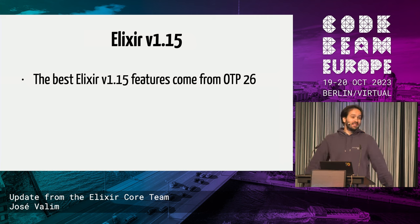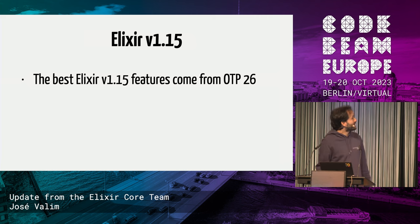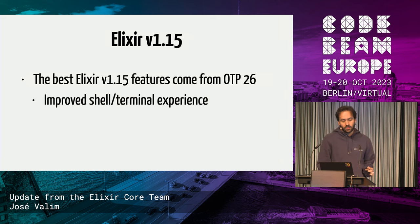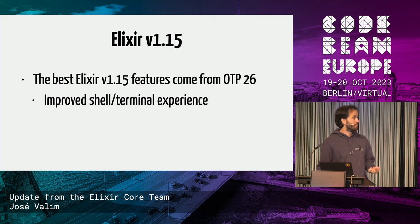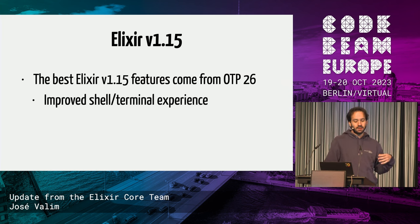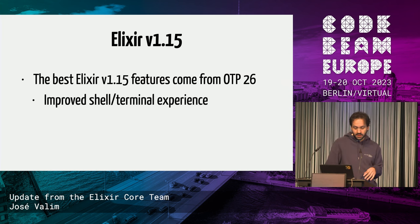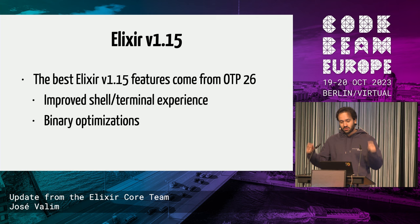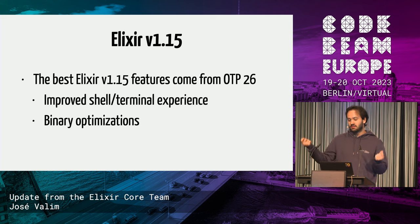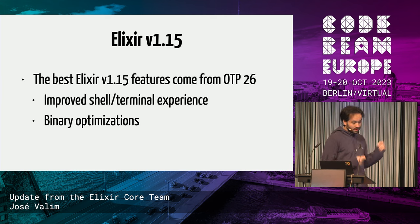It's nice because it means I don't have to do a lot of work — thank you, OTP team. They're really great features. For a long period of time, people on Windows would complain about the shell, the terminal, the IEx experience, and that has been pretty much solved with OTP 26. The compiler team has done a lot of new binary optimizations; the base module in Elixir is now twice as fast.